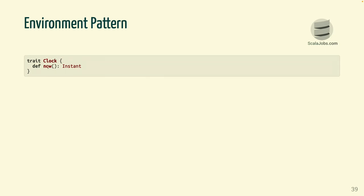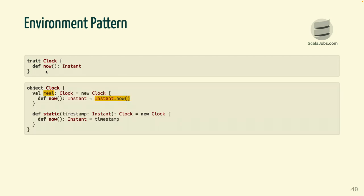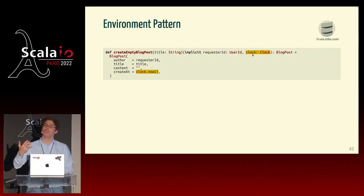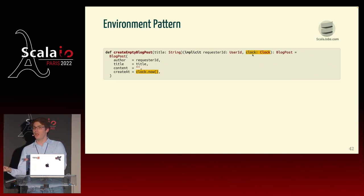We create an interface called Clock with a method now that returns the current time. We have two implementations: one is the real system clock that actually calls Instant.now, and a second is a static clock that always gives the same result. The first is for production, the second for testing. We change our createEmptyBlogPost method to add the clock in the implicit parameters — both the author ID and the clock are passed implicitly — and within the code we call clock.now. Because we use the Clock interface, we can use a different clock in production versus tests.